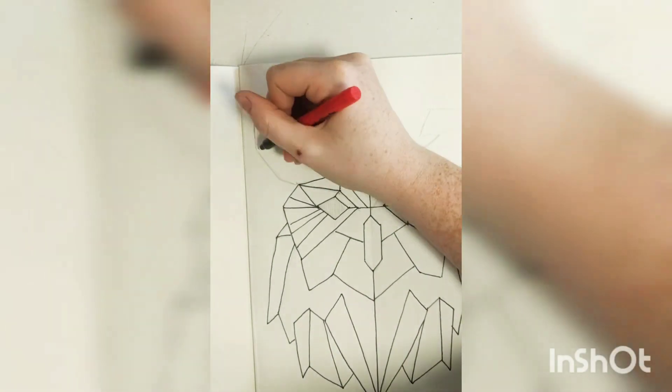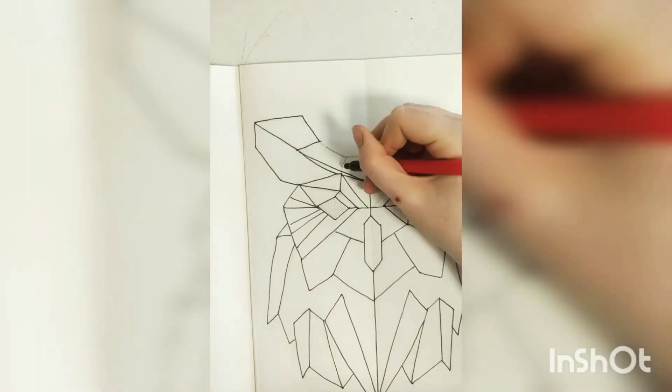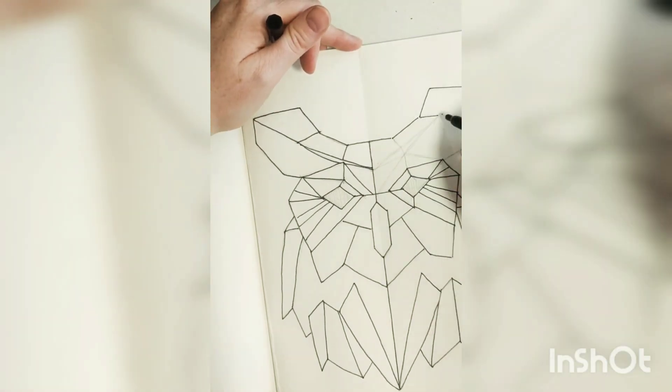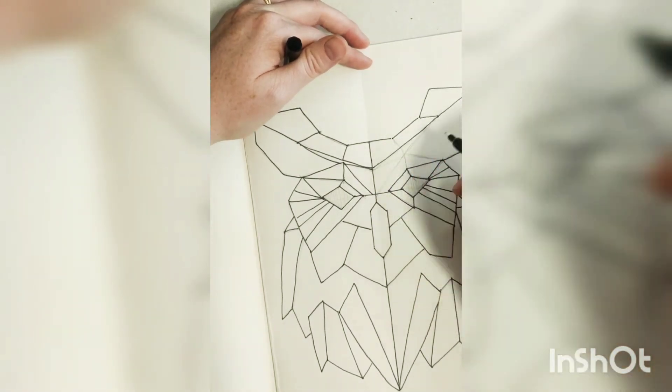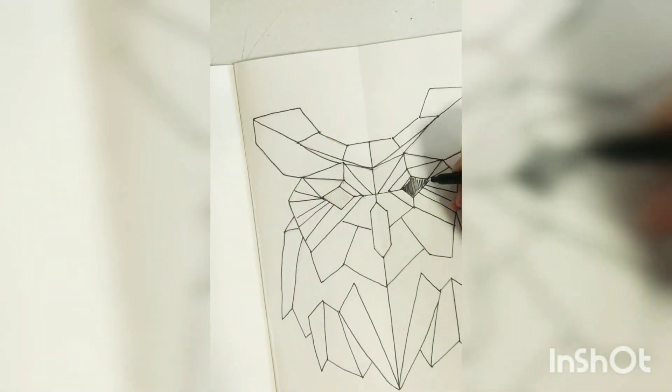When you are doing lines like this, can you see that I'm using like one stroke to do my lines? I'm not using a lot of strokes like I would if I was sketching. And that just means that you get a really nice smooth line with a good finish.